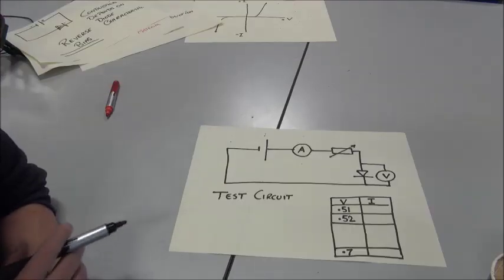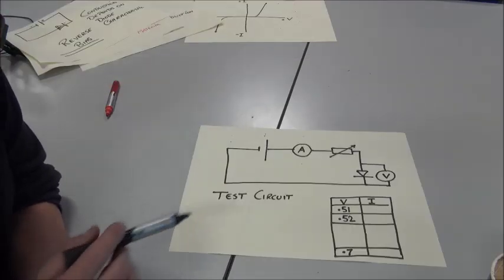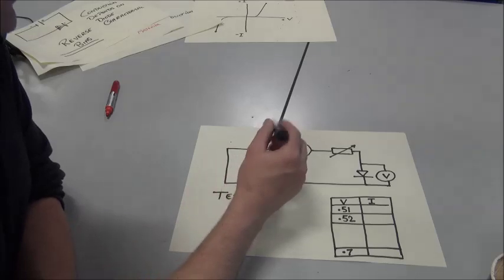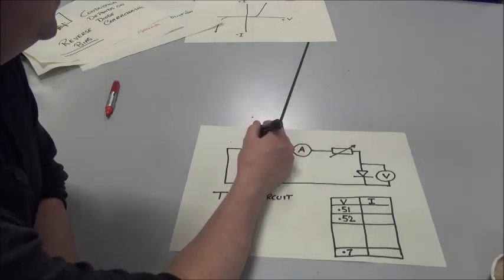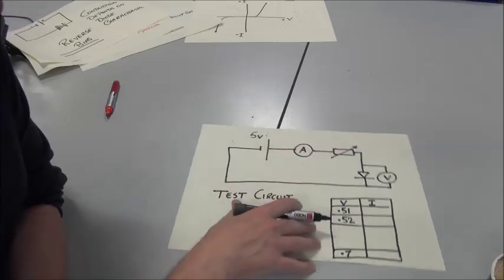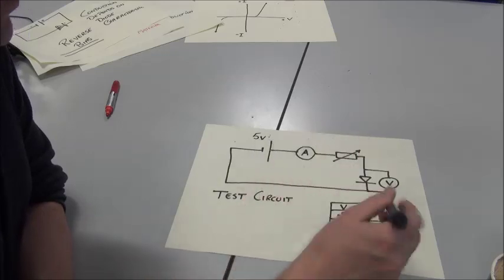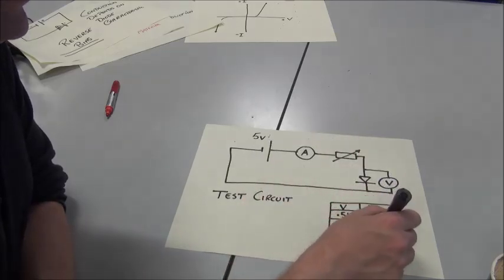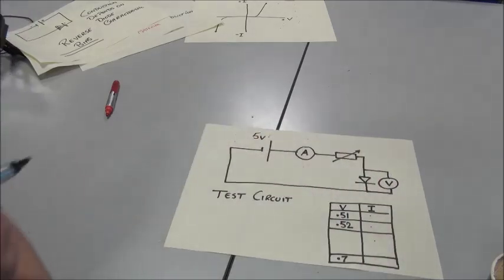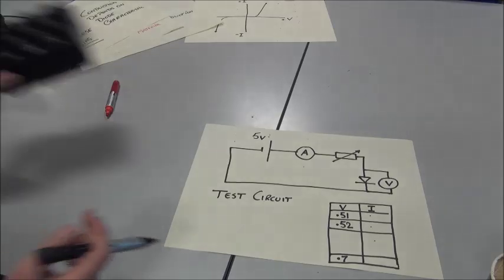This is the test circuit you're going to build. A very simple circuit. We've got a power supply here. I would say that we could comfortably set that at about 5 volts, no problem. We're going to go in series through an ammeter. That's going to measure our current. And we're going to plot our current in a table.